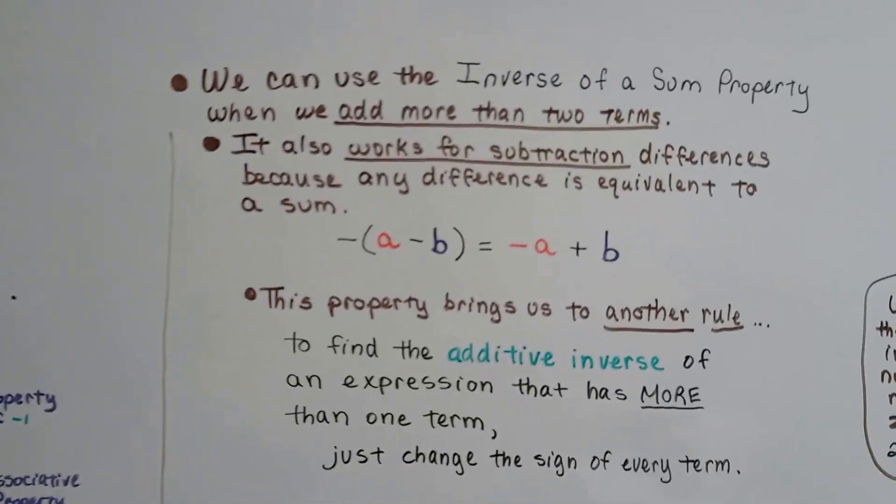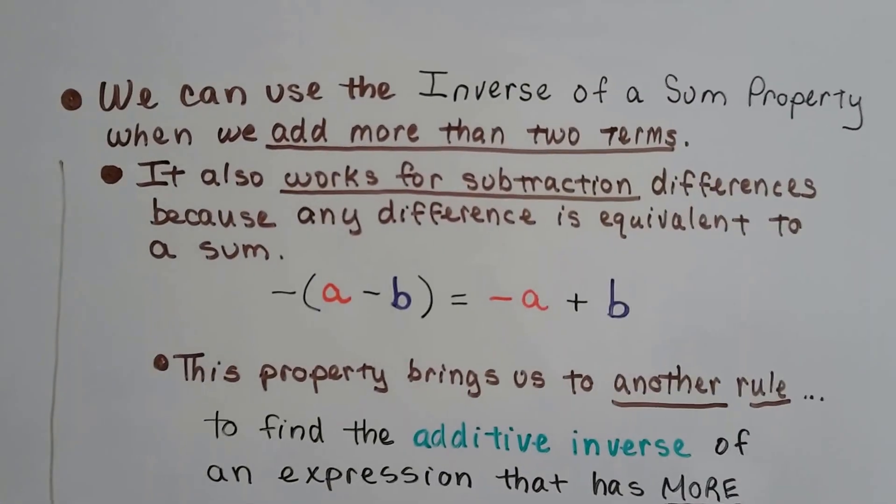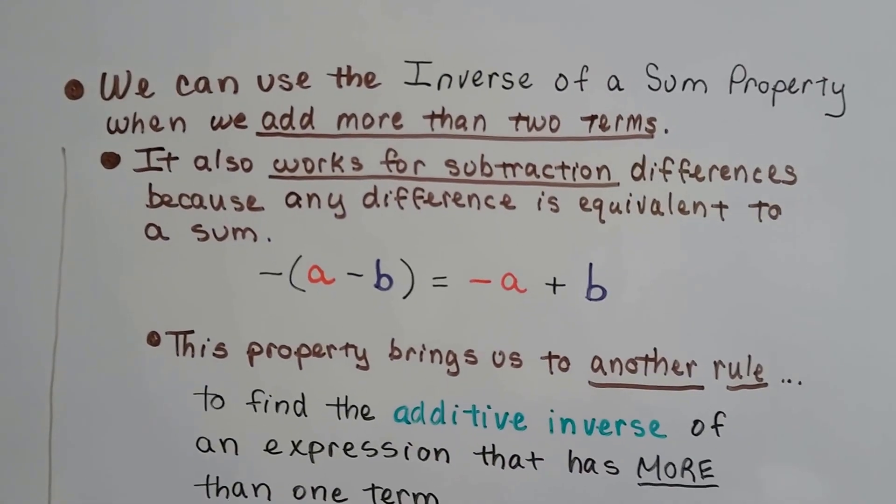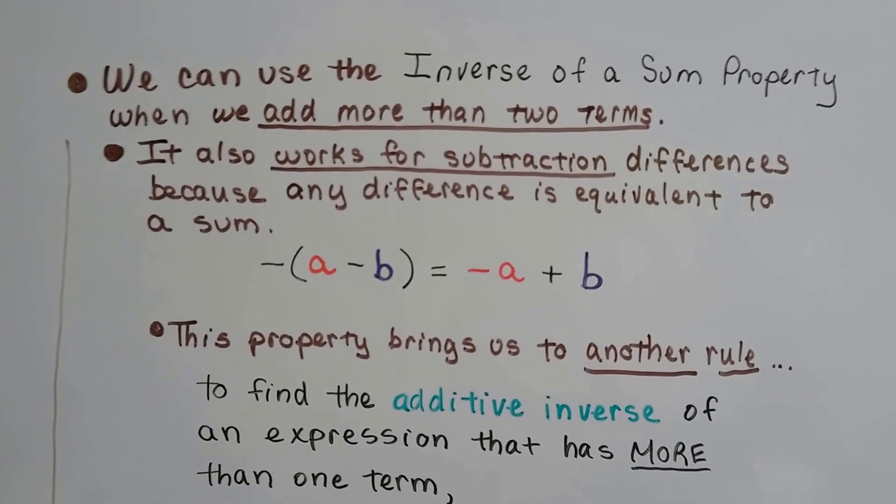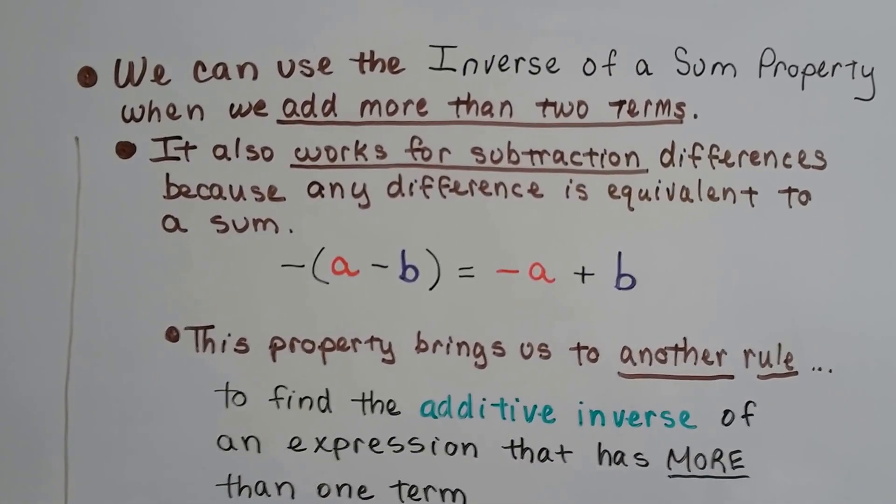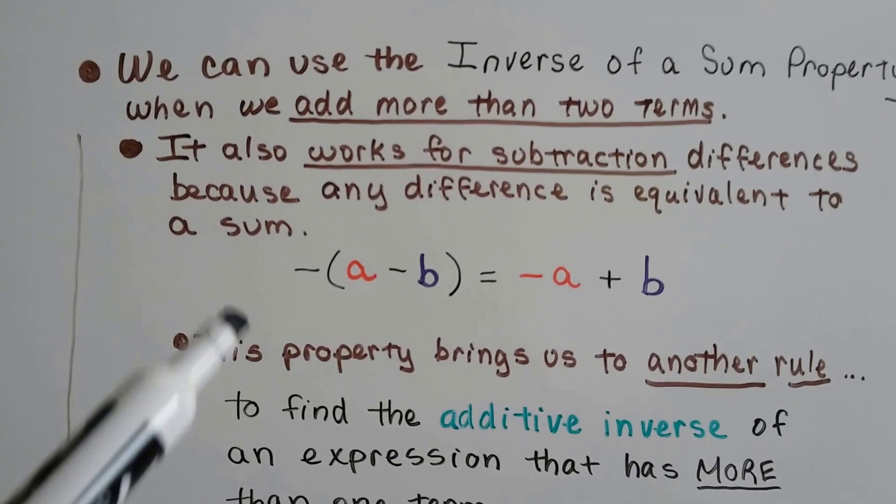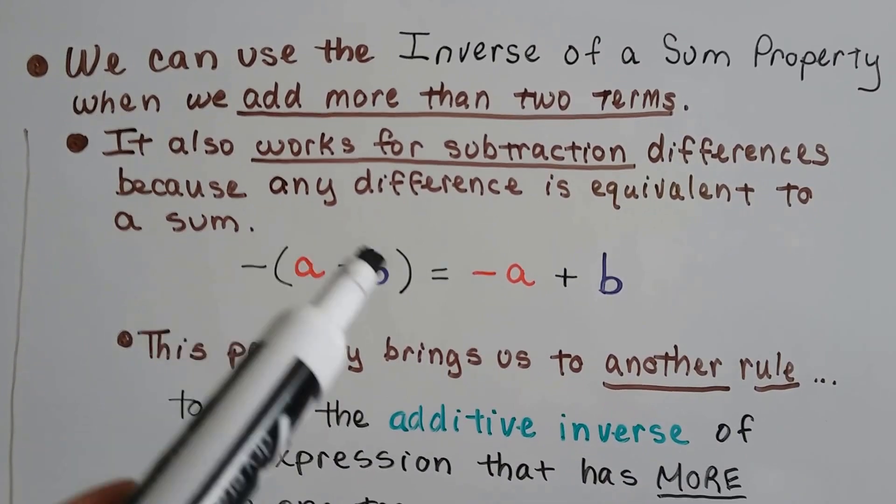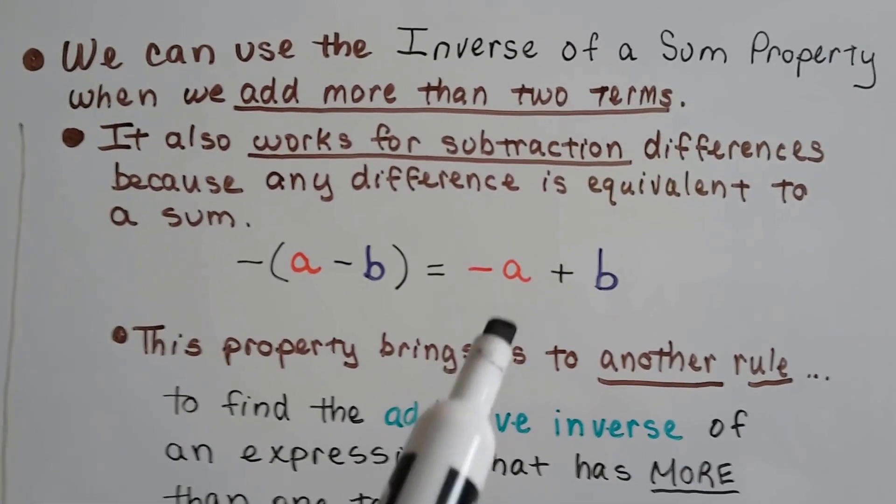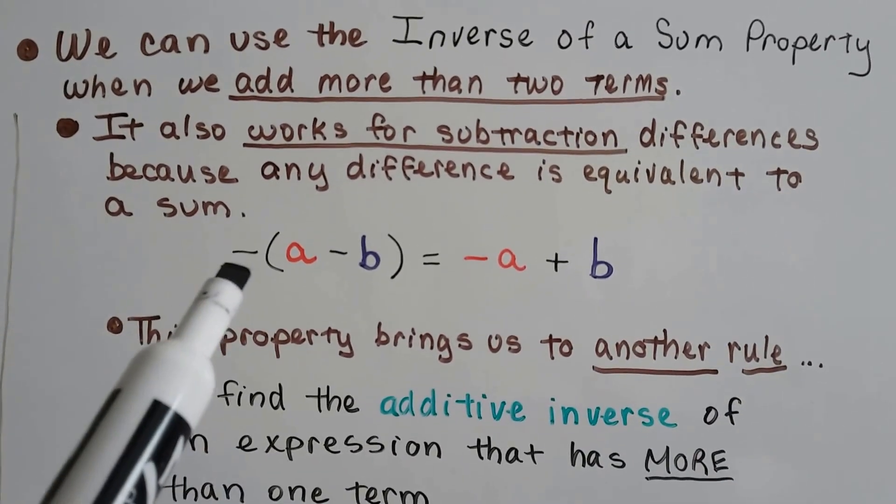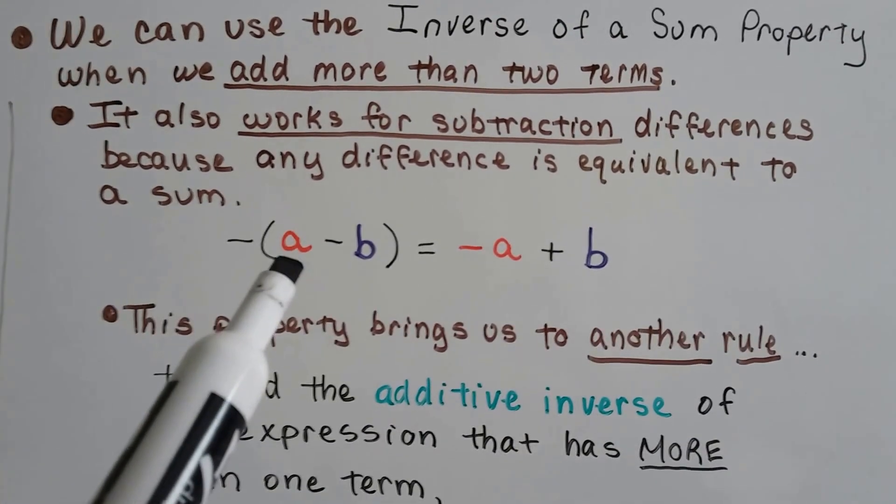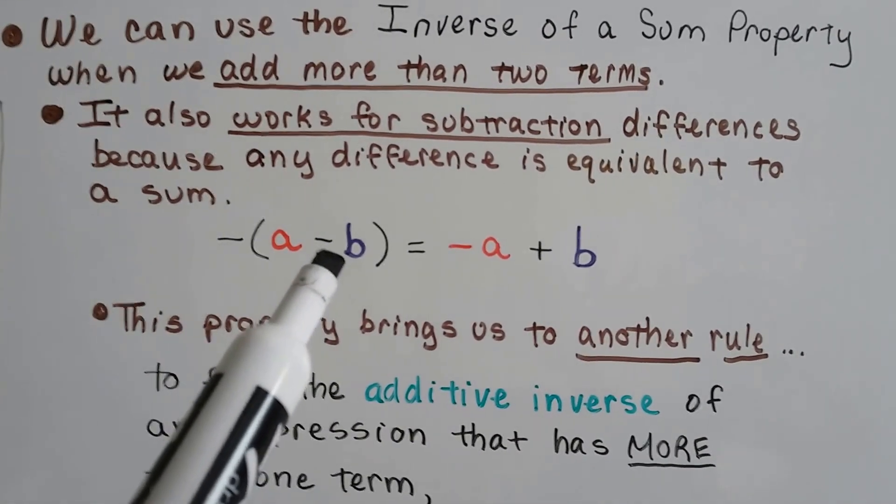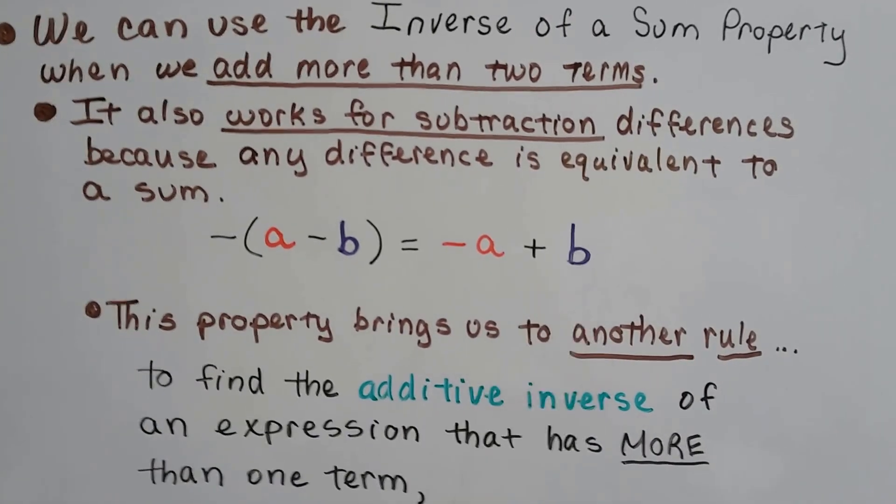And we can use the inverse of a sum property when we add more than two terms. It doesn't have to just be one, it could be two, three, four. It also works for subtraction differences because any difference is equivalent to a sum. So if we distribute this inverse, this negative, to the a and distribute it to the b, we're going to end up with negative a plus b. We're going to have negative 1 times a is negative a, and negative 1 times negative b makes positive b.